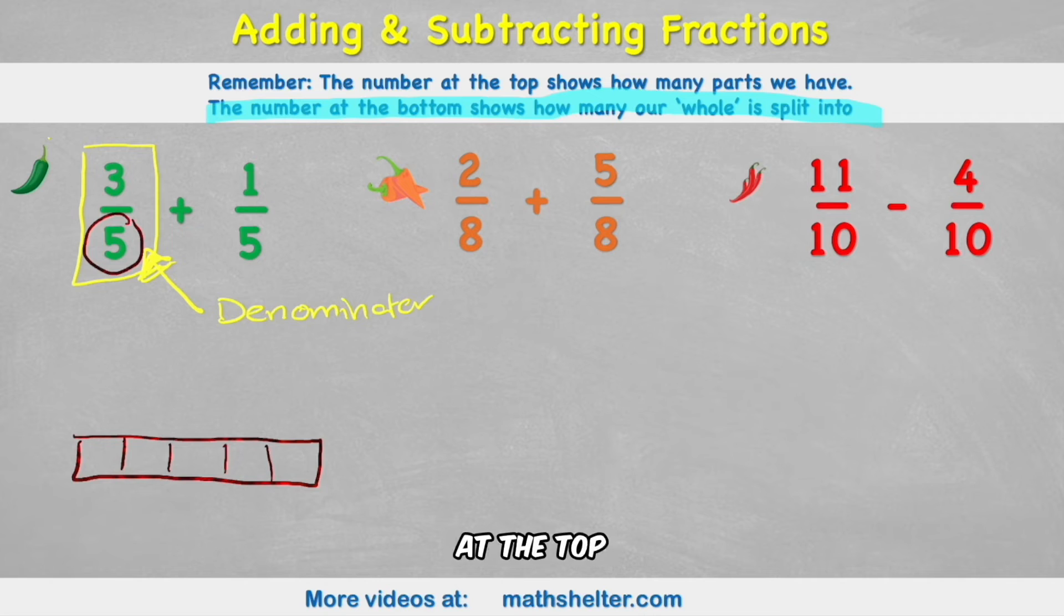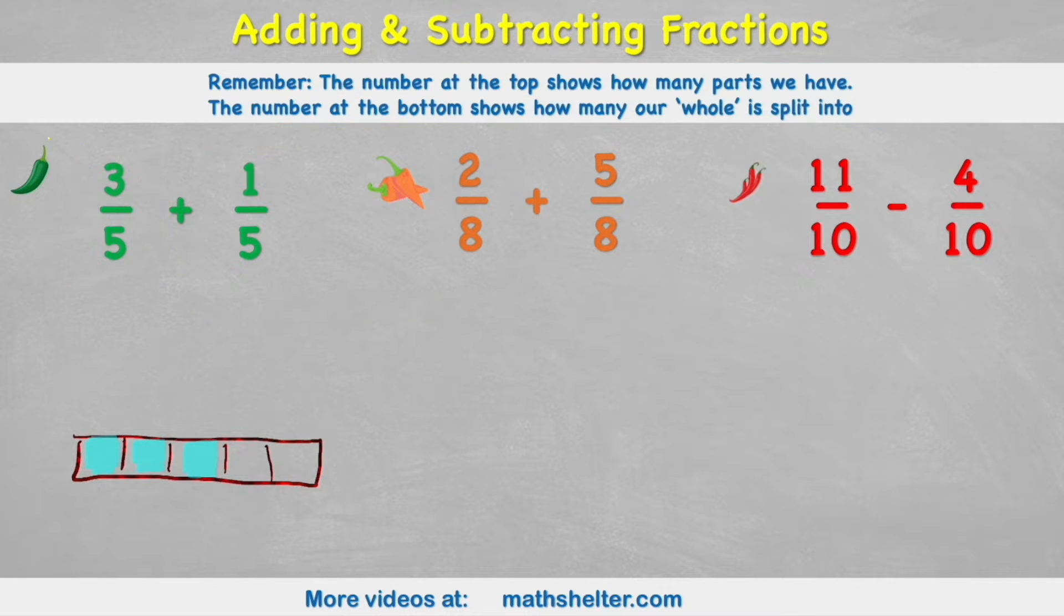Then we have the number at the top. And the number at the top, if we look back to what we remember, the number at the top tells us how many of those parts we actually have. And we call this the numerator. And in this case, we have 3 of them. So it's like saying I have this first one, the second one, and the third one. So I have 3 fifths. So my 3 fifths looks like this.